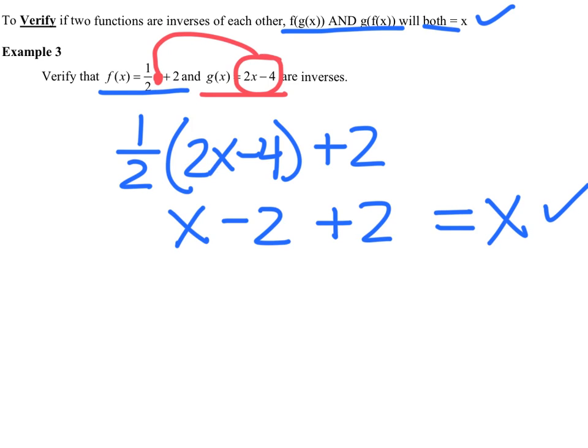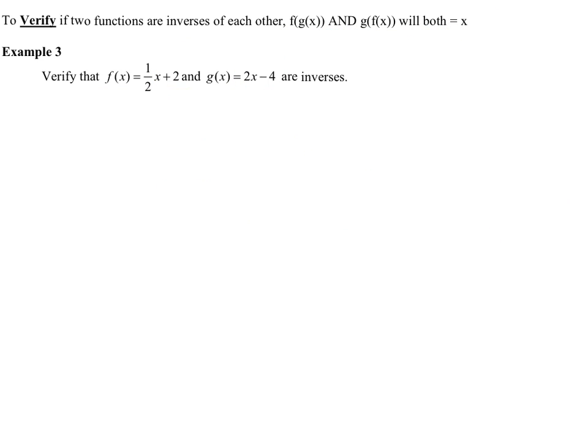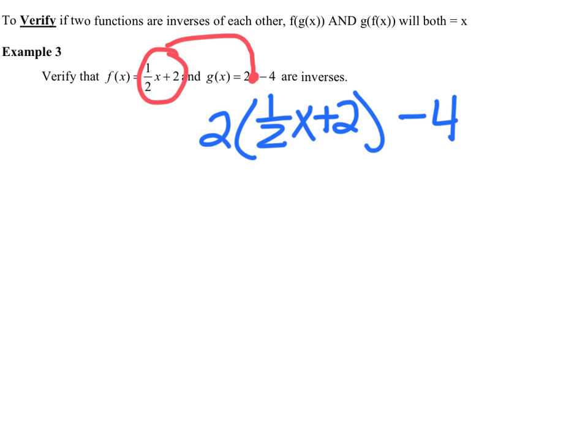However, you have to do both. So now, I have to take the f of x function and put it into the g of x function in place of x. So now I need 2 times, and then instead of x, I want 1/2 x + 2. I want the whole other function, and then minus 4. So now I can simplify this. 2 times 1/2 of x is x. 2 times +2 is +4, minus 4. x + 4 - 4 equals x. Therefore, they both equaled x, and we have verified it. You've shown me on the paper that they both equal x with check marks. They are inverses of each other.